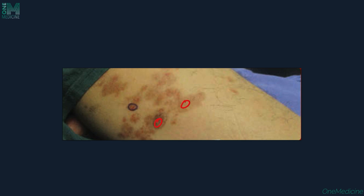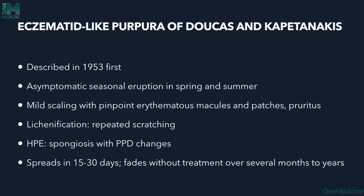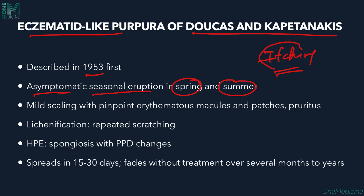Eczematoid-like purpura of Doucas and Kapetanakis was first described in 1953. It is an asymptomatic but pruritic seasonal eruption occurring mainly in spring and summer. It features mild scaling with pinpoint erythematous macules and patches. Due to persistent itching, patients scratch repeatedly, leading to lichenification — thickening of the skin with increased skin markings.